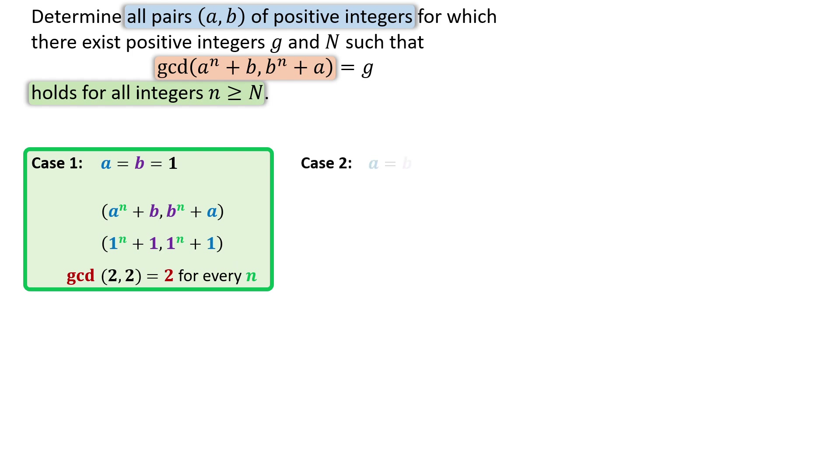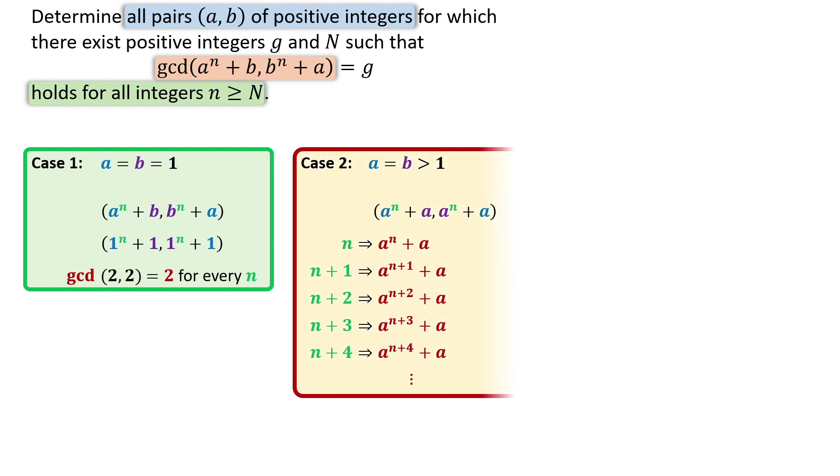But we check if there is a solution when a and b are equal, but both are greater than 1. In this case, both expressions become a to the n plus a. When the value of n changes, GCD also changes and never stays constant.